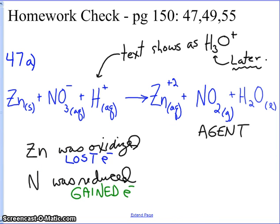In summary, zinc was oxidized and nitrogen was reduced. That means zinc lost the electrons and nitrogen gained them.